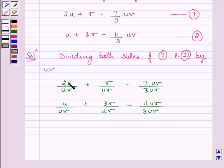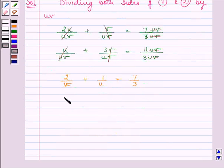These simplify to 2 divided by v plus 1 divided by u is equal to 7 by 3 and 1 divided by v plus 3 divided by u is equal to 11 by 3.